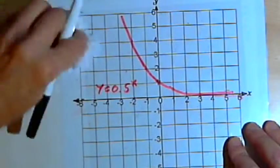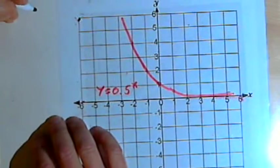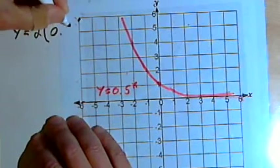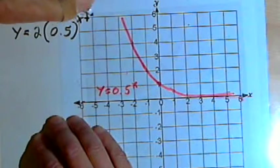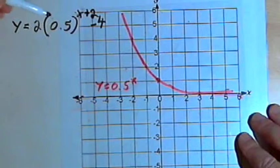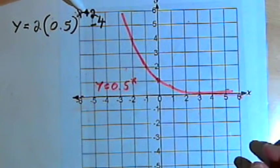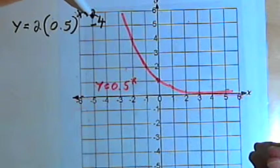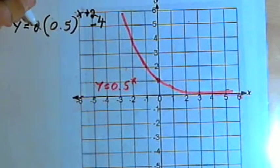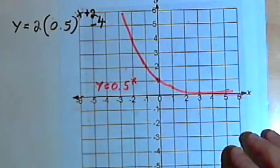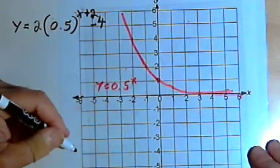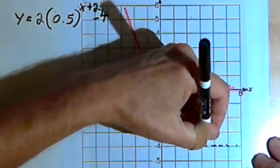And now, as with other transformations you've seen, we can take these and combine them. So we can do something like y equals 2 times 0.5 to the x plus 2 minus 4. This x plus 2 is going to take the graph and shift it horizontally. That plus 2 is going to shift it over to the left by 2 units. The coefficient 2 is going to stretch it vertically by a factor of 2. And the minus 4 at the end is going to drop everything down, which means I'm going to have a horizontal asymptote at y equals negative 4.